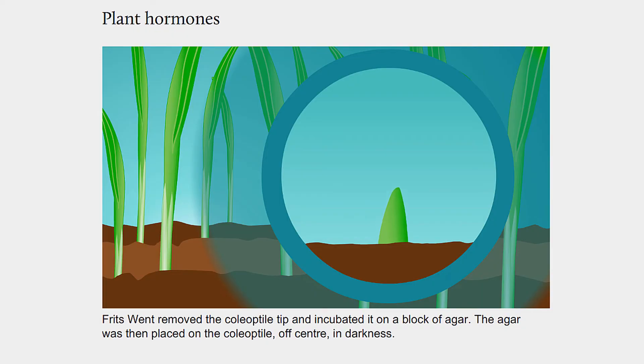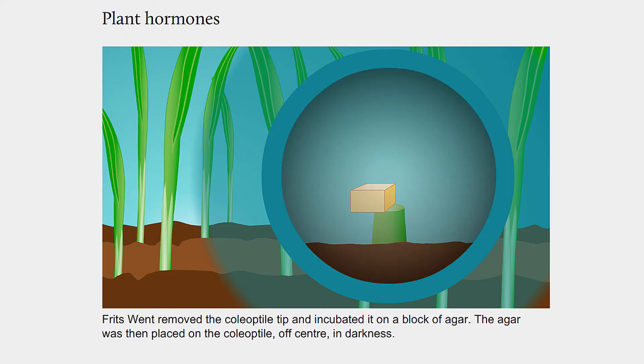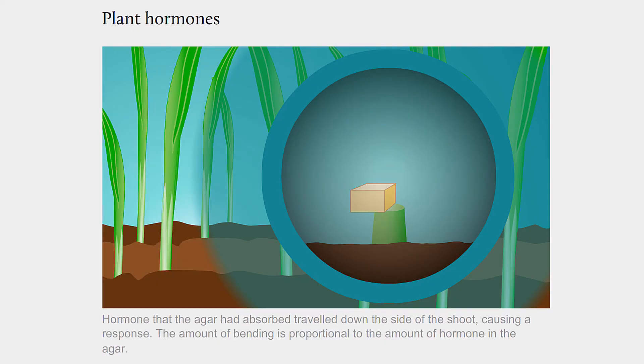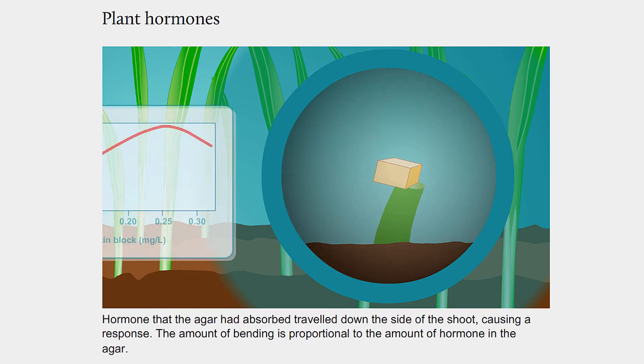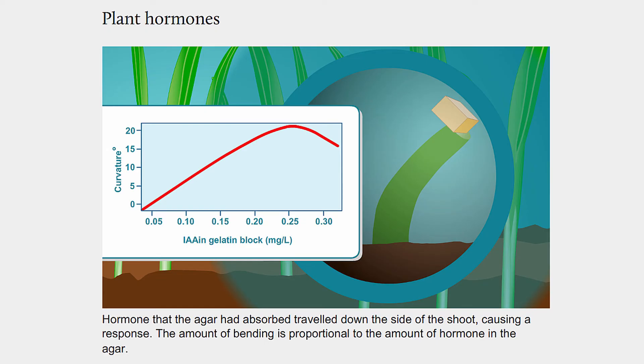Fritz Went removed the coleoptile tip and incubated it on a block of agar. The agar was then placed on the coleoptile off-center, in darkness. Hormone that the agar had absorbed travelled down the side of the shoot, causing a response. The amount of bending is proportional to the amount of hormone in the agar.